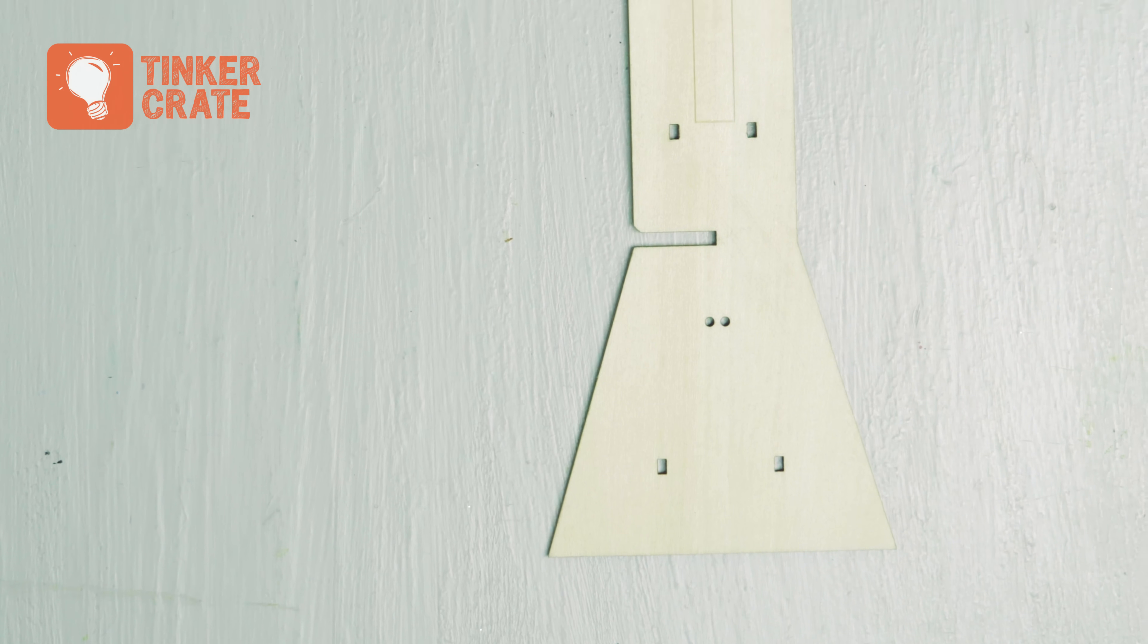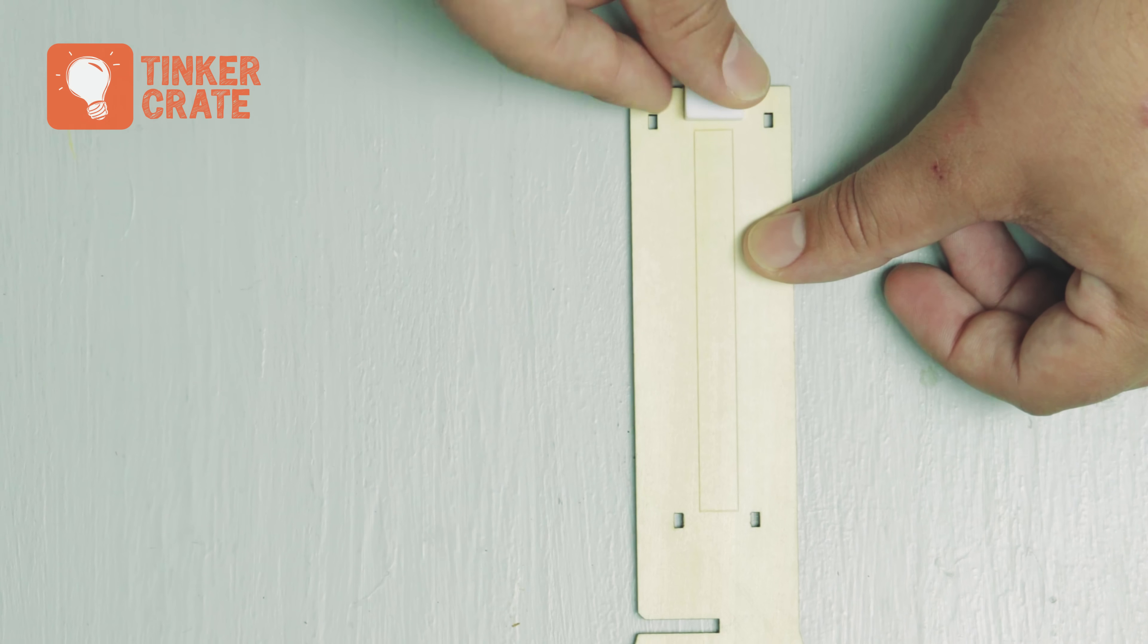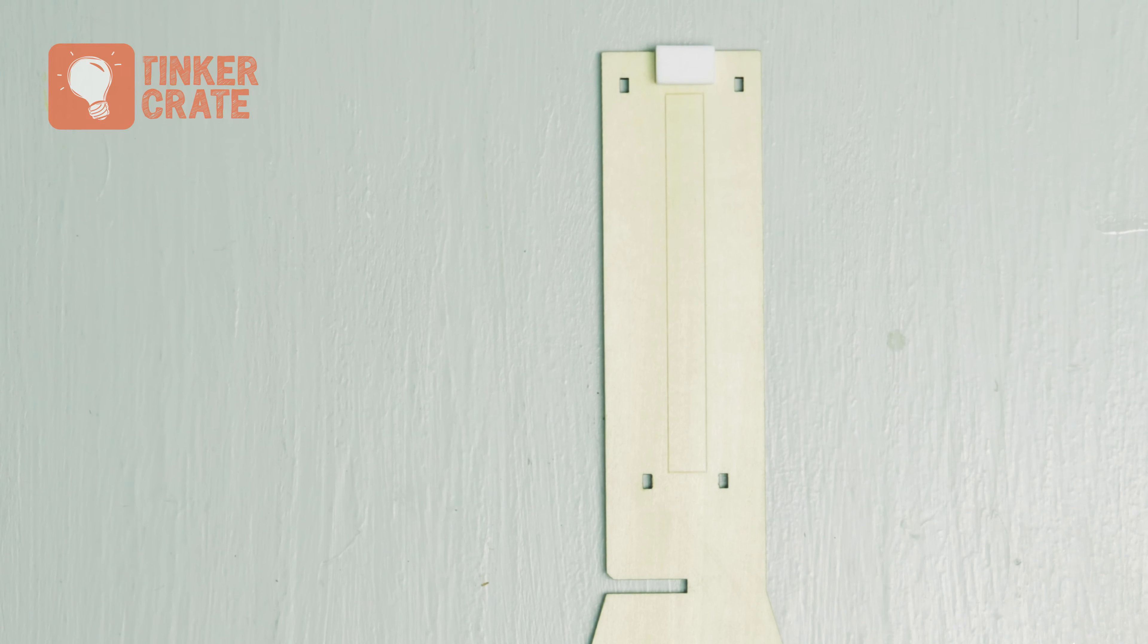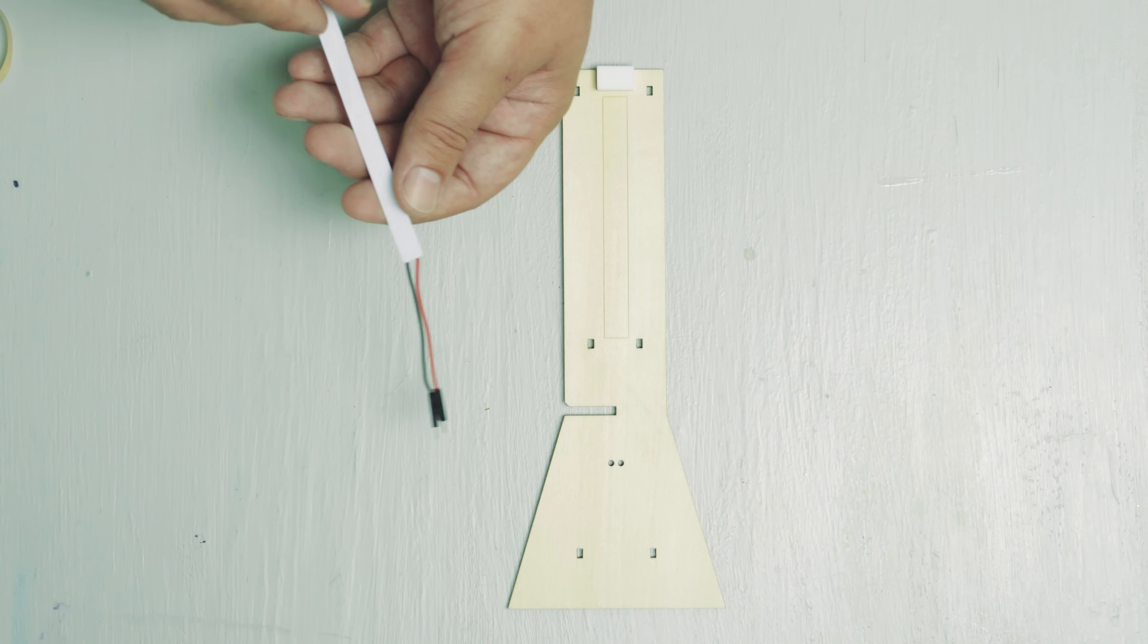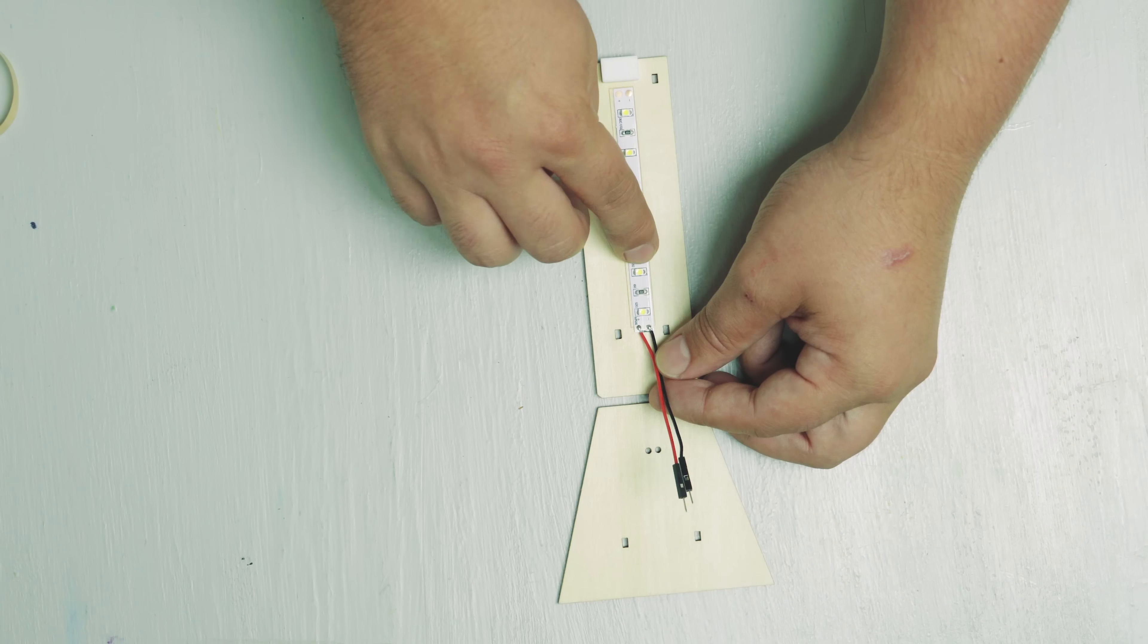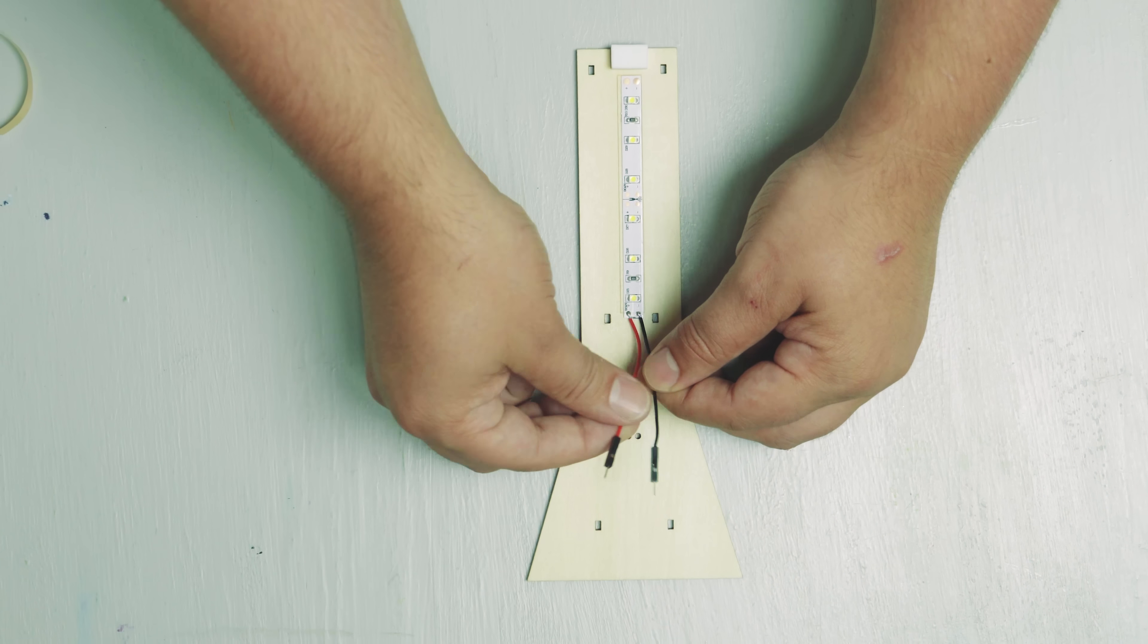Lay out the tall wooden piece so that you can see the rectangles etched on it. Stick a piece of white sticky foam onto the top rectangle. Peel the backing off your LED strip and stick it to the long rectangle so that the wires are facing the bottom of the wooden piece.